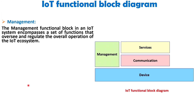Now let us focus on management. The management functional block in an IoT system encompasses a set of functions that oversee and regulate the overall operation of the IoT ecosystem. It handles tasks such as device provisioning, configuration management, monitoring system performance, and handling system updates to ensure the smooth functioning of the entire IoT deployment.